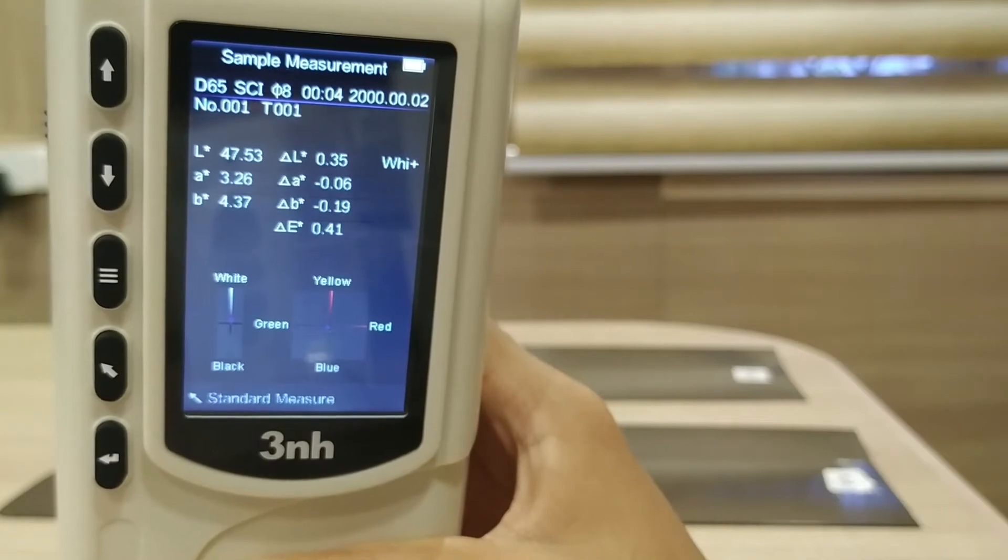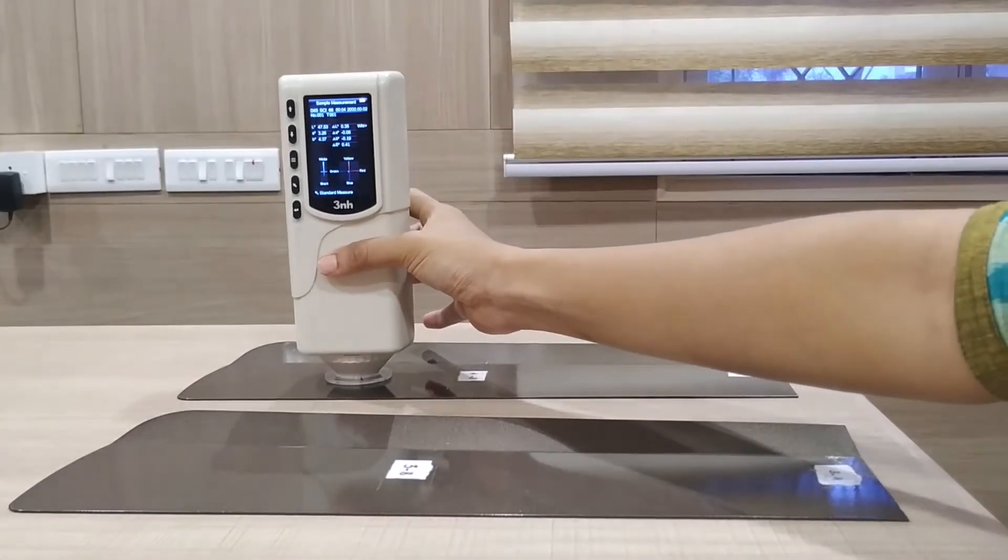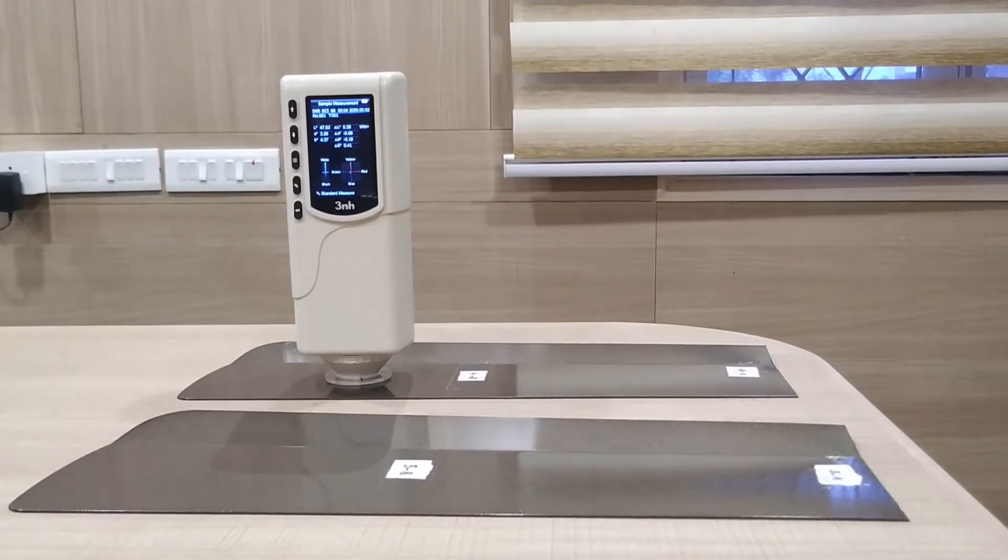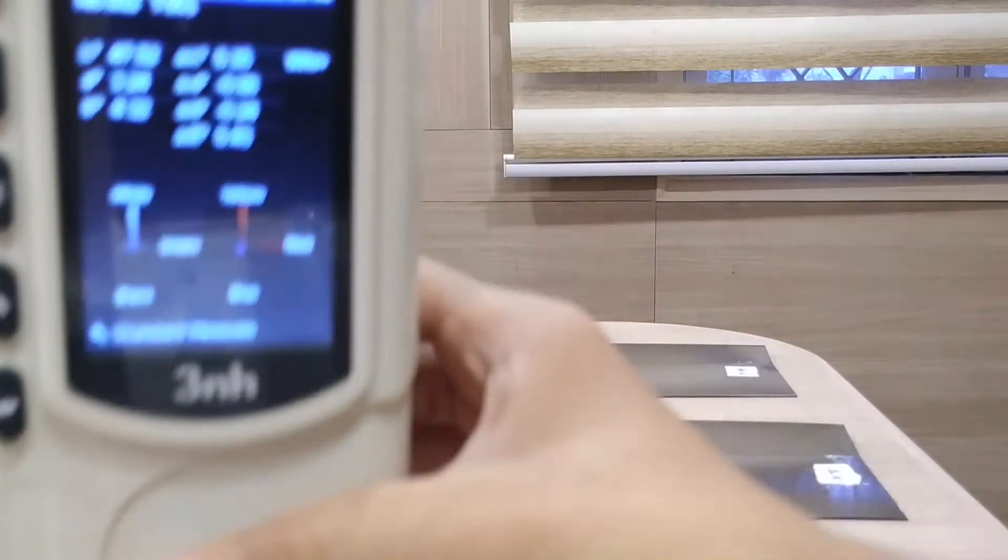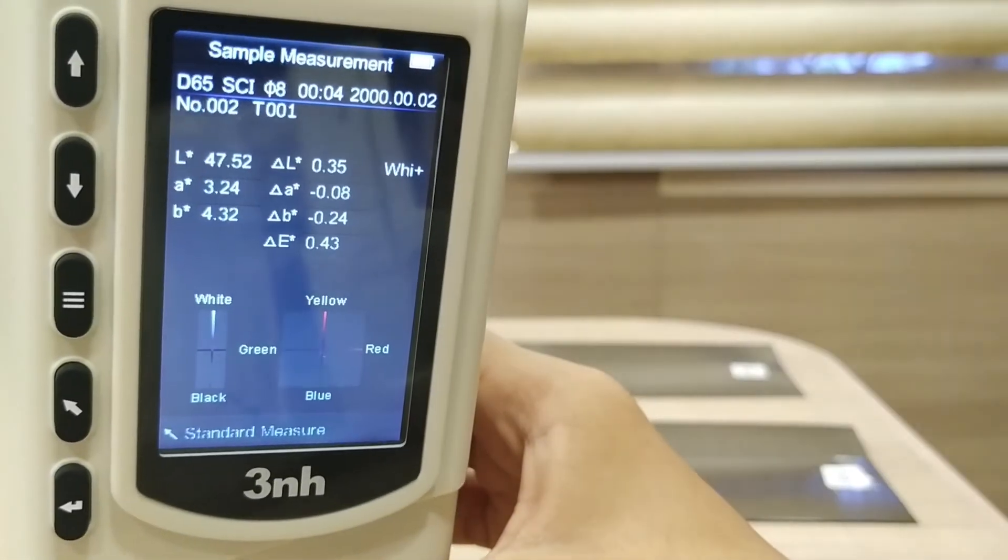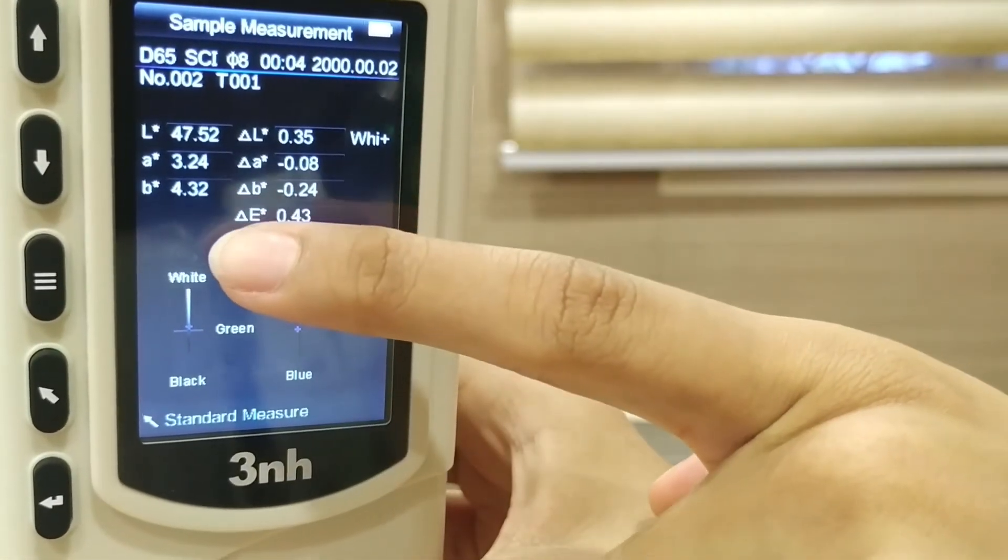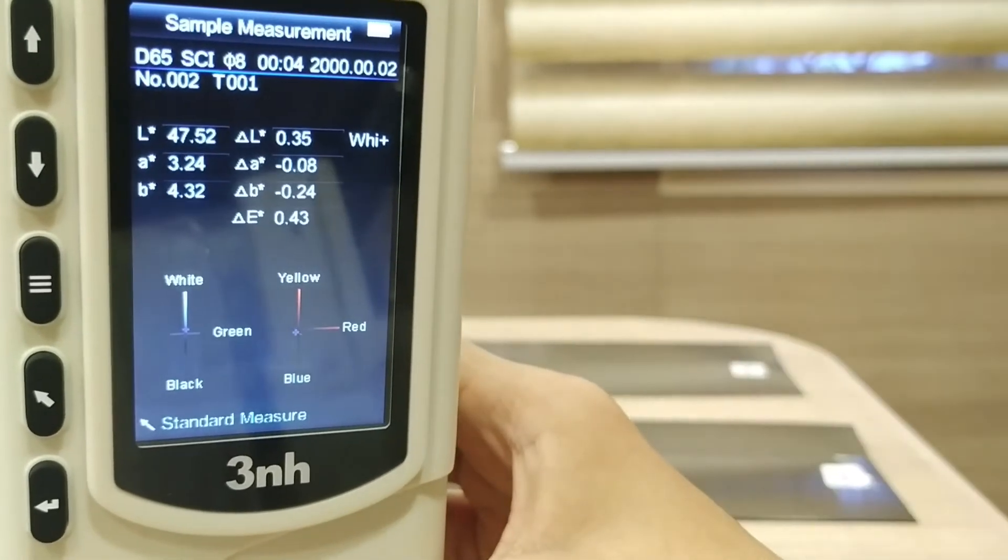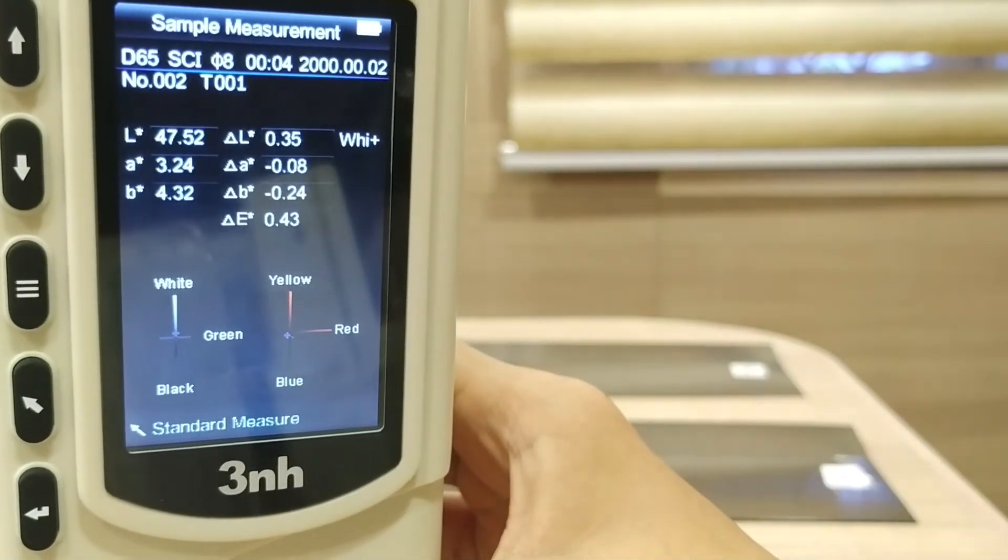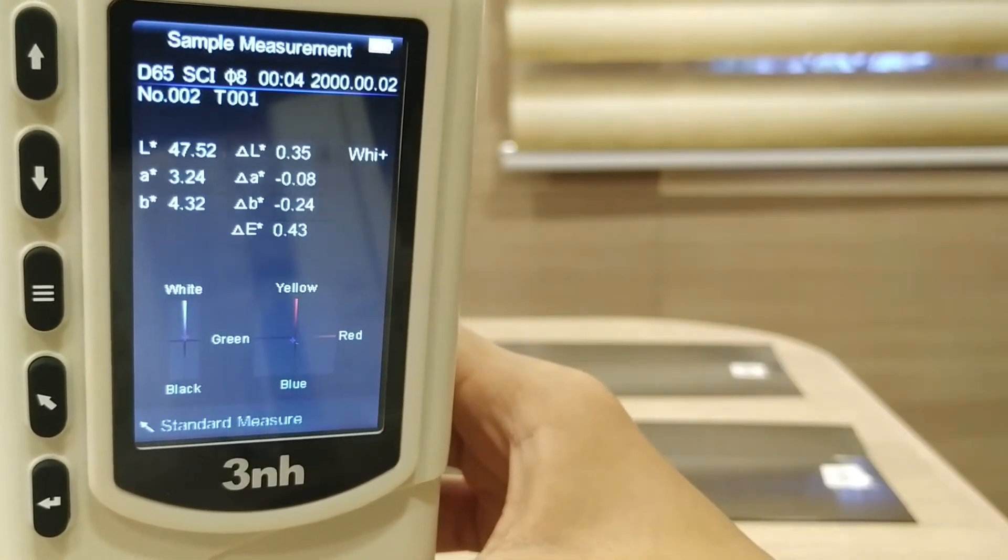Now let us measure our second sample. For our second sample you can see that the delta E value is 0.43, which again is accepted in all industries. Therefore, our sample number 2 has passed the color test.